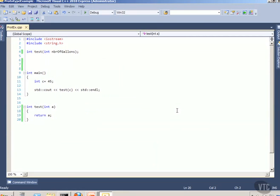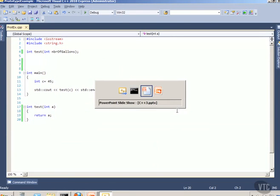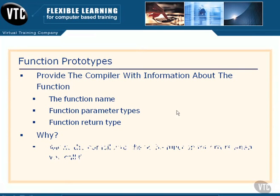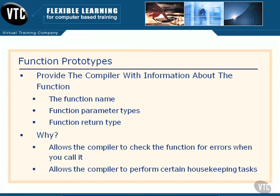Now, let's jump back out to here and talk about why we need these. Well, it allows the compiler to check the function for errors when you call it. It also allows the compiler to perform certain housekeeping tasks in the background. Now, this has to do with linking and changing your code later and how it's managed at machine level and all that. And I don't want to go into that right here, but trust me, there's a lot of cool stuff going on.